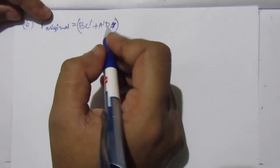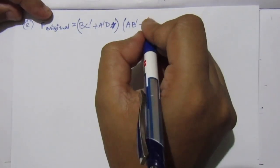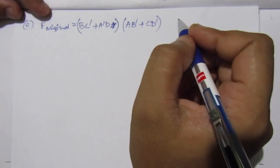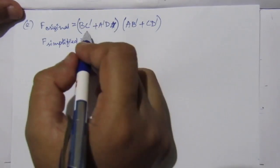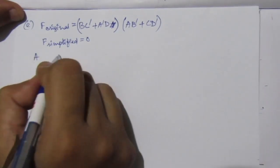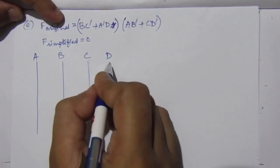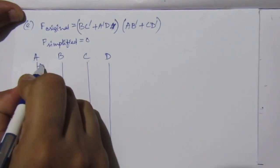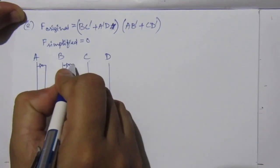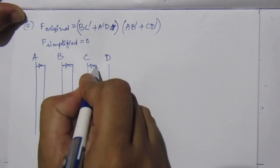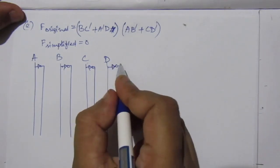For part E: F original equals (BC̅ + A̅D)(AB̅ + CB̅), and F simplified equals 0. We have four inputs A, B, C and D. Draw four lines and use inverters to get A̅, B̅, C̅ and D̅.